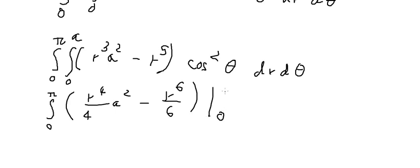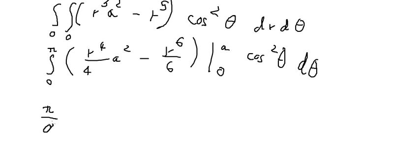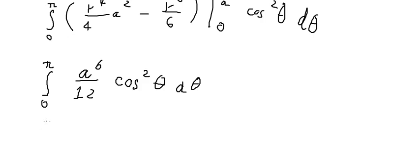We have the boundary here. We put A in here and get A to the power of 6 over 12 cosine square theta dθ.